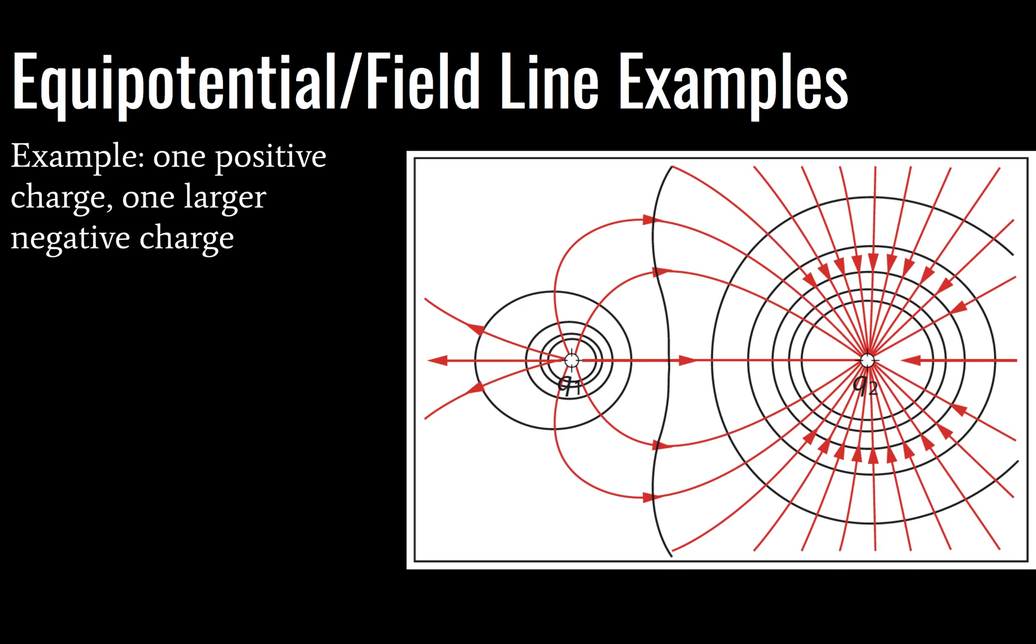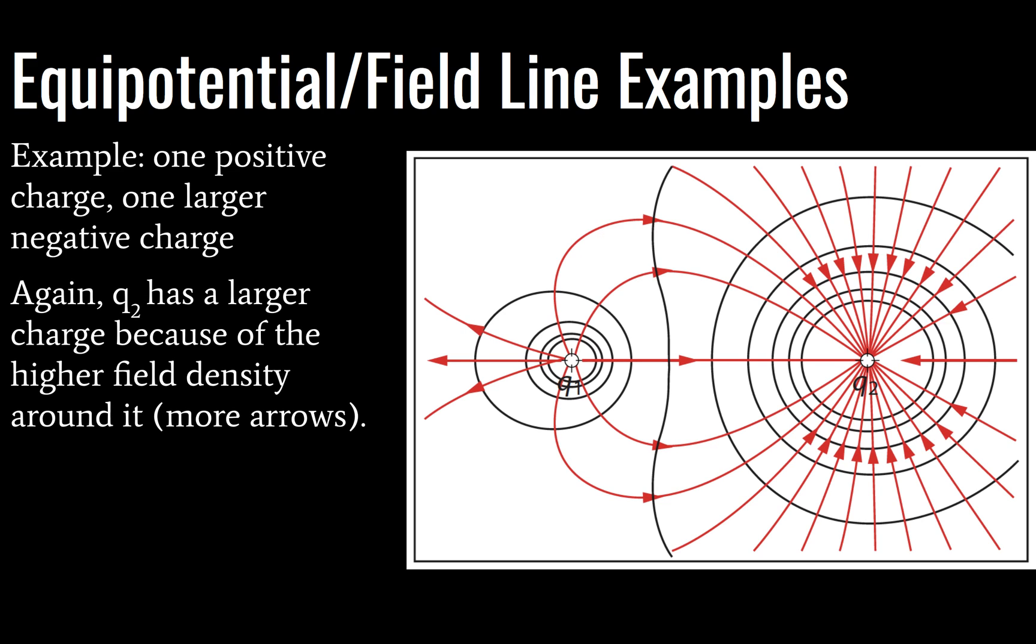Here we have one positive charge and one larger negative charge, and by larger we're talking about the magnitude of the charge. And we would know that because of the higher field density frequency, but also because of the larger spacing between our equipotential surfaces. So these are just a few examples, but don't be surprised if some others get thrown at you at some point, and you should be able to recognize them. You should probably also be able to draw equipotential surfaces or field lines.